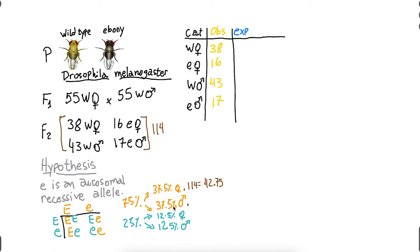Right? So the same thing goes here. 37.5% of 114 is also 42.75 imaginary flies. 12.5% of 114 is 14.25, and these are my expected values. And if you add all these numbers together, you should have 114 as well.